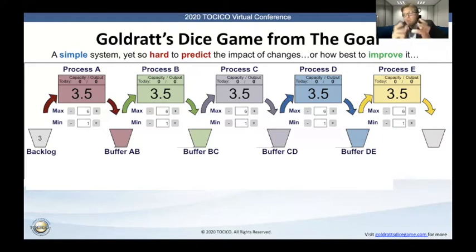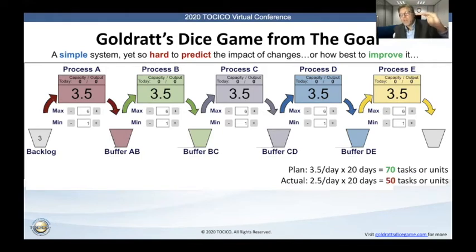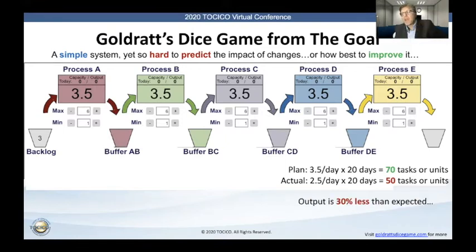That definitely helps, and you can play the simulation game — we've got a Goldilocks Dice Game version that's a free app you can download and play around with. What you'll see is if you get the buffers right, you made a commitment of 70, and you can substantially improve performance by just adding buffers to decouple the system. You've moved from a chaotic system with interactive constraints to a complex system with multiple but non-interactive constraints. You can typically increase output from about 30 or 35 all the way up to about 50 tasks per month — a substantial improvement. But there's still a problem: you are still 30% less than what you expected to produce, so you are not meeting commitments to both your customers and shareholders.